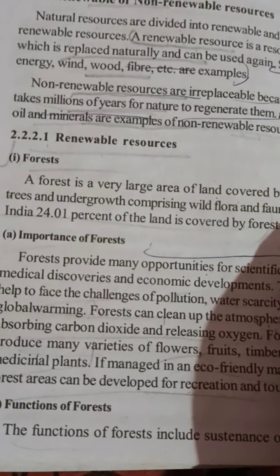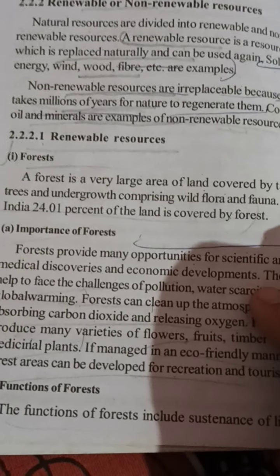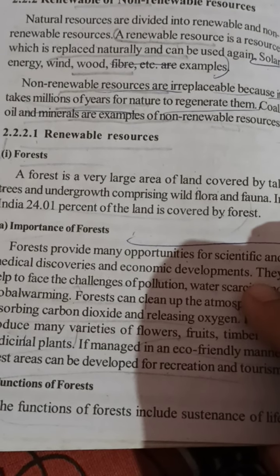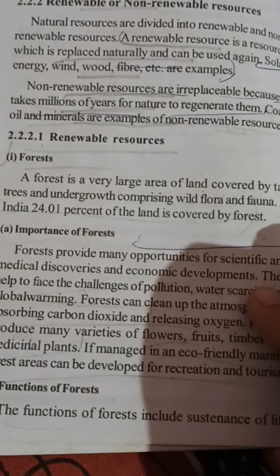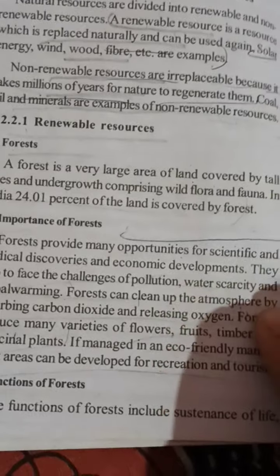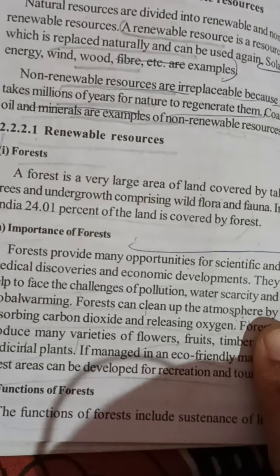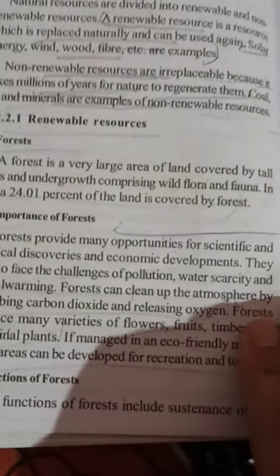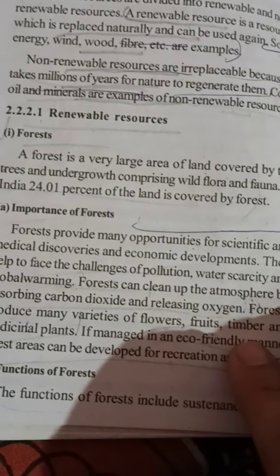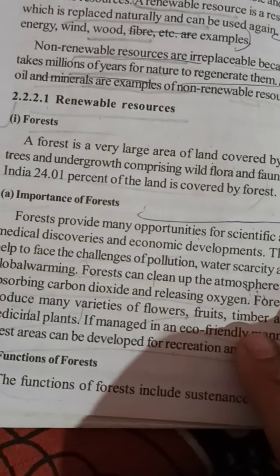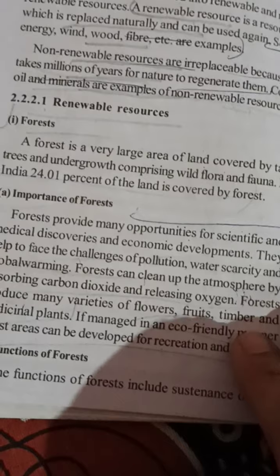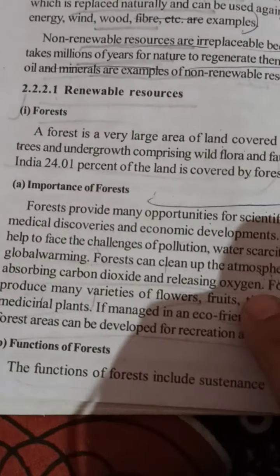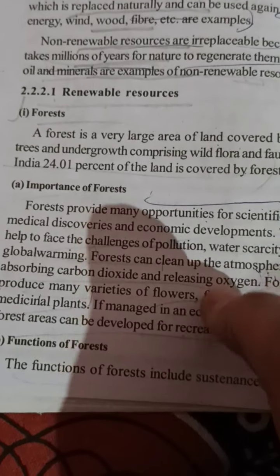The first major renewable resource is forest. A forest is a very large area of land covered by tall trees and undergrowth comprising flora and fauna. Flora refers to a wide variety of plants, and fauna refers to a wide variety of animal species. In India, 24.01 percent of land is covered by forest.